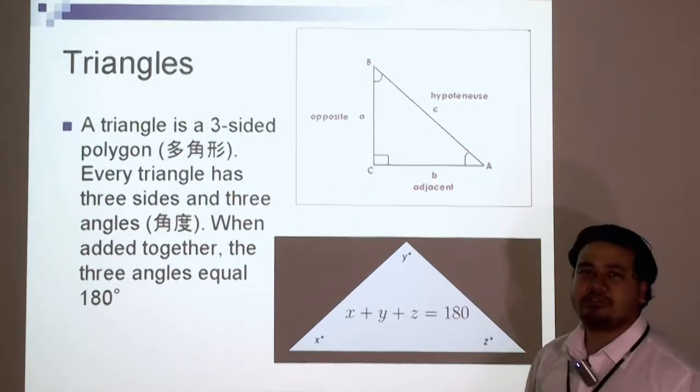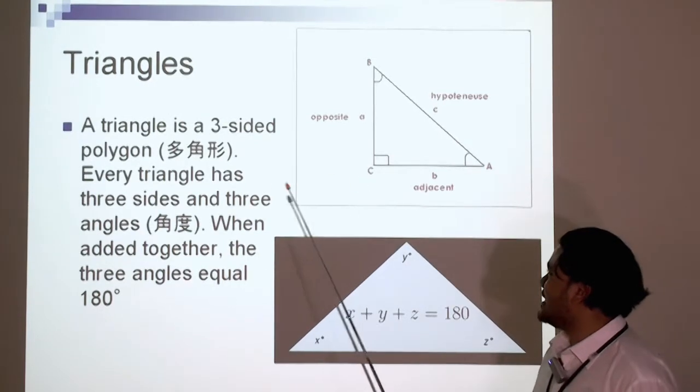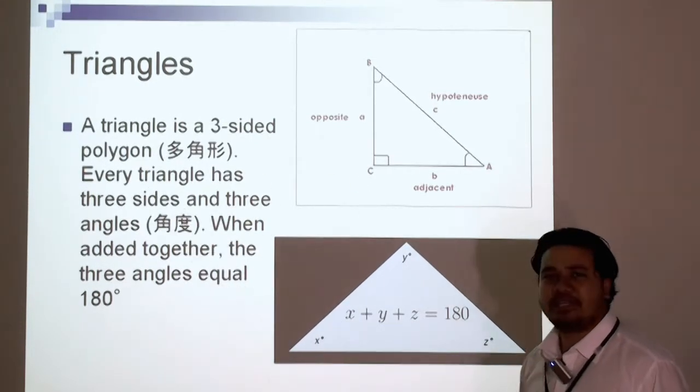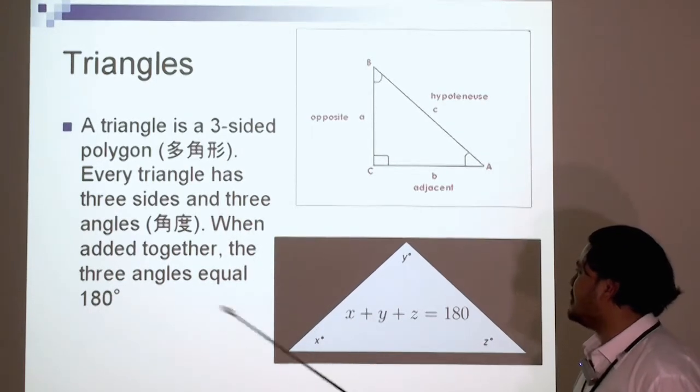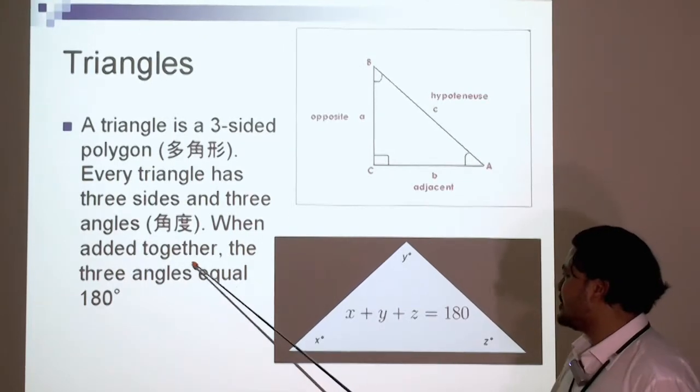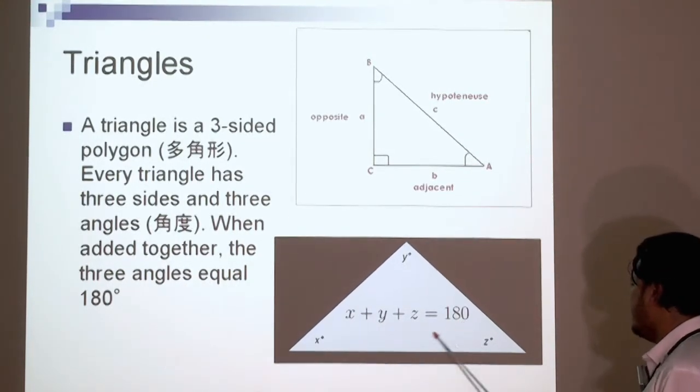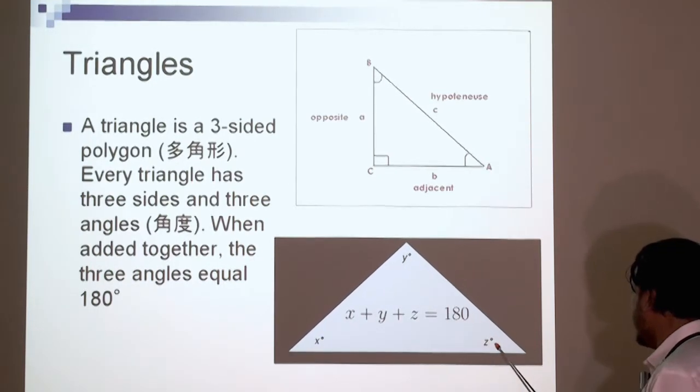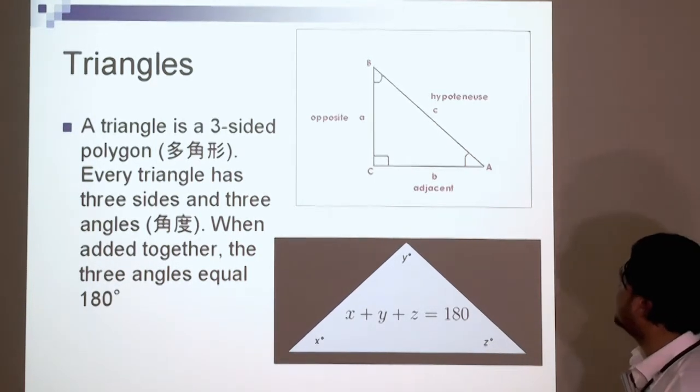First slide of our topic. Triangles. What exactly is a triangle? A triangle is a three-sided polygon. A polygon means it has many sides, a shape that has many sides. Every triangle has three sides and three angles. When added together, the three angles equal to 180. Perhaps one of the most popular rules of a triangle, X plus Y plus Z equals 180 degrees.